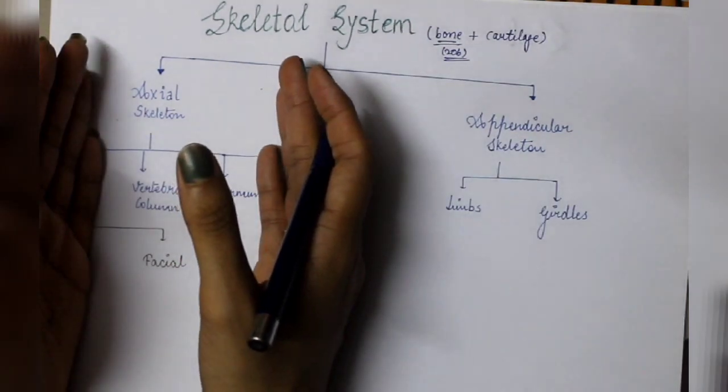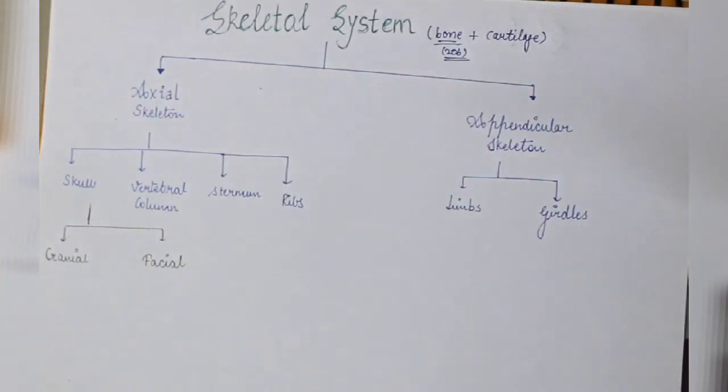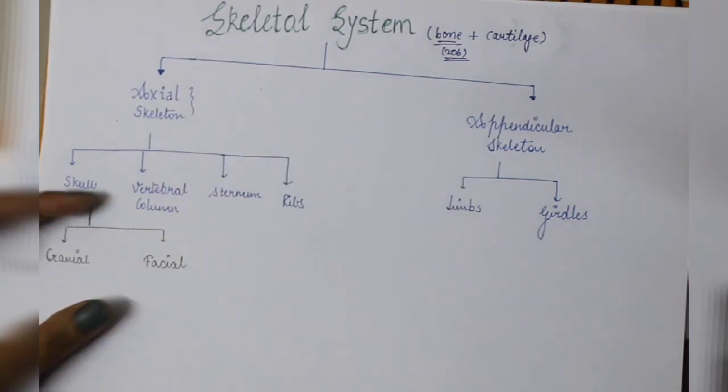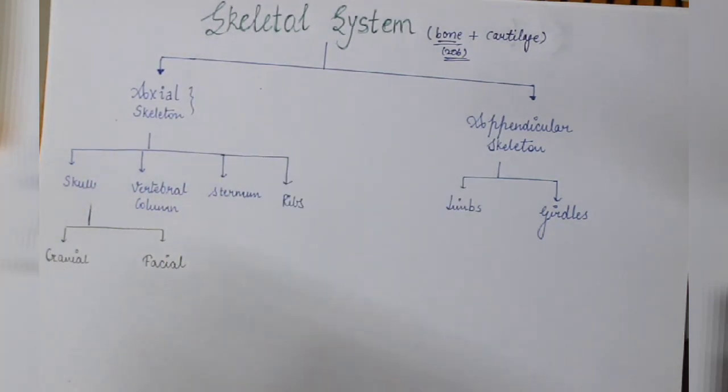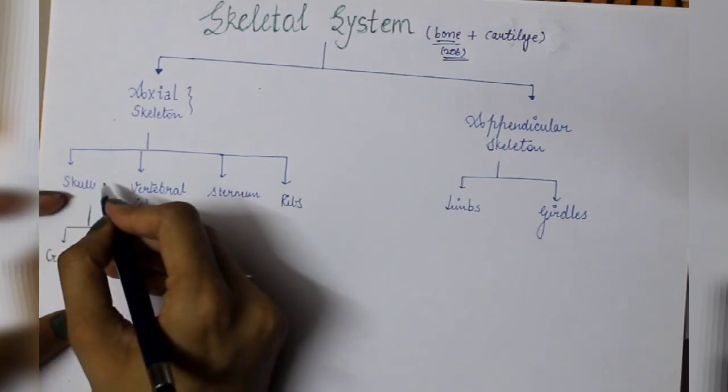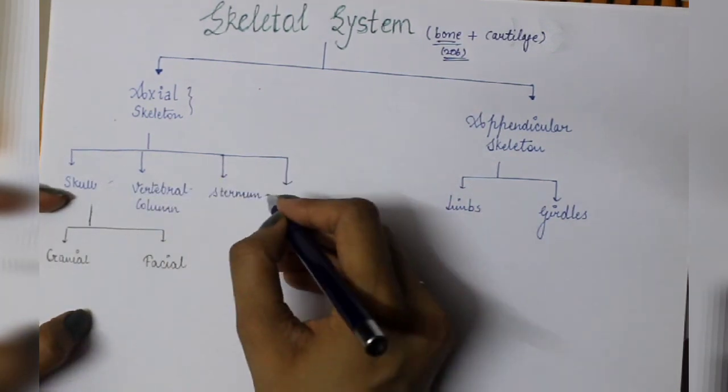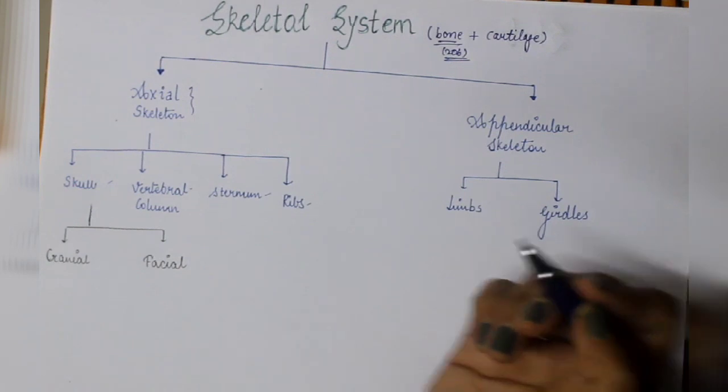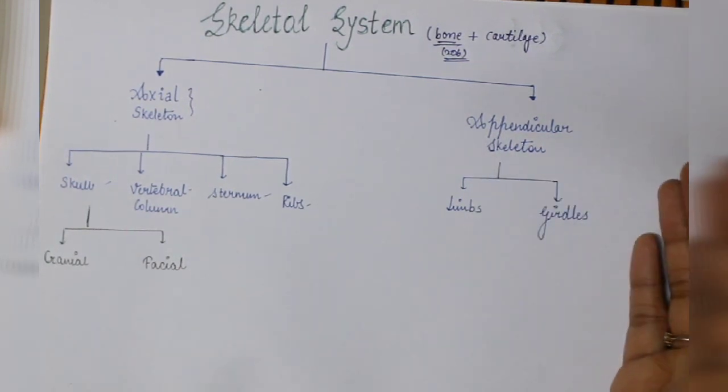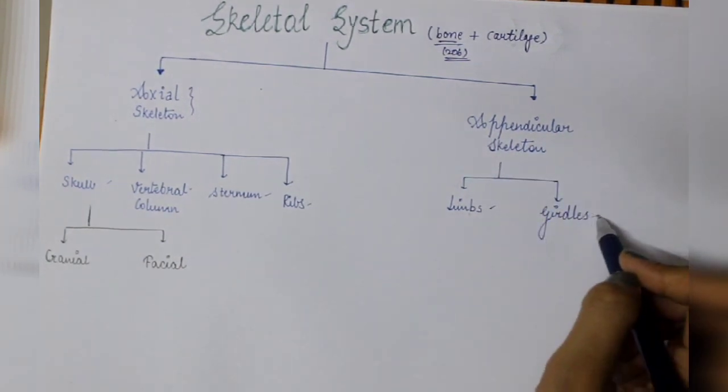Those are axial skeleton and appendicular skeleton. Axial skeleton is main core skeleton of your body. It consists of skull, vertebrae column, sternum and ribs. While appendicular skeleton consists of limbs and girdles.